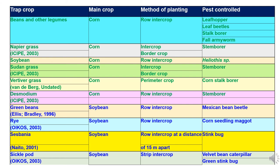In the main crop of corn, beans and legumes are used as row intercrop to control leafhoppers, leaf beetles, stalk borers, and fall armyworm. Napier grass is used as an intercrop and border crop to control stem borer. Soybean is cultivated as a row intercrop to control Heliothis. Sudan grass can be used as an intercrop or border crop to control stem borer. Vetiver grass can also be used as a perimeter crop to control corn stalk borer. Desmodium is used as a row intercrop in corn to control stem borer.